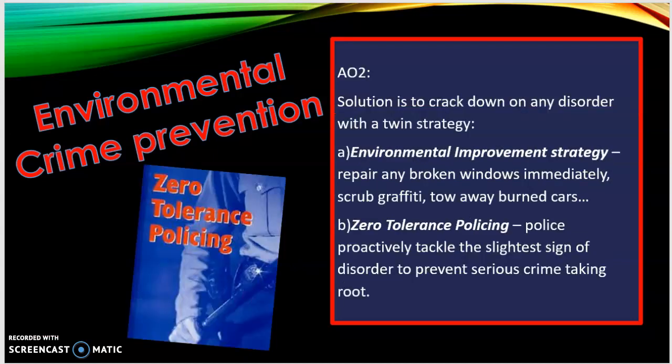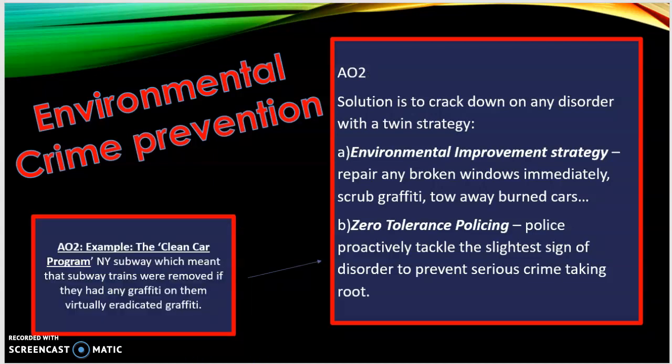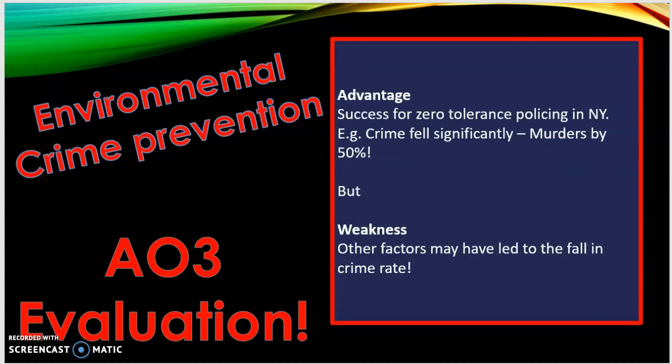This strategy tackles decline through two things: first, environmental improvement strategies — fix the broken windows immediately, scrub the graffiti, tow away burnt cars; basically fix the area to show somebody cares. Second, zero tolerance policing — nipping any signs of disorder in the bud to prevent more serious crimes taking root. An example is New York's Clean Car Program, where subway cars with any graffiti were removed, which virtually eradicated graffiti on those subway cars.